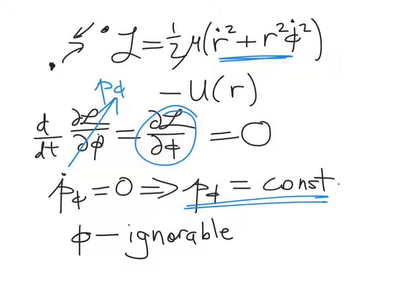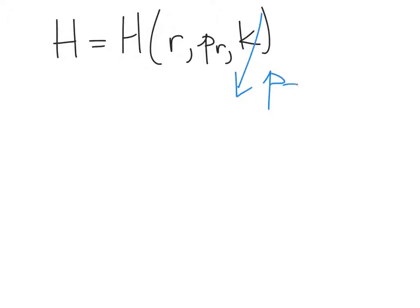And so that means that we can write the Hamiltonian by incorporating this constant. In other words, for the central force problem, our Hamiltonian can be written as a function of r, the momentum associated with r, and the constant k, where k is the phi momentum, which we've just worked out to be a constant. So it just comes into the equation as a constant. And so phi is an ignorable coordinate.